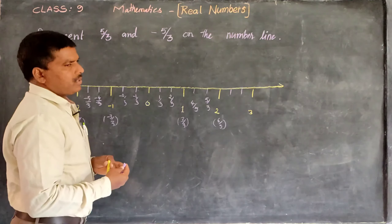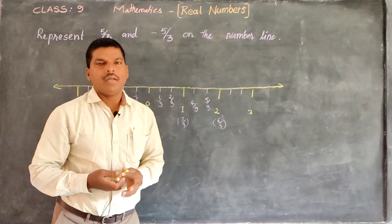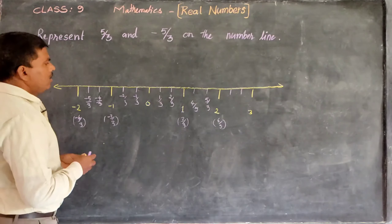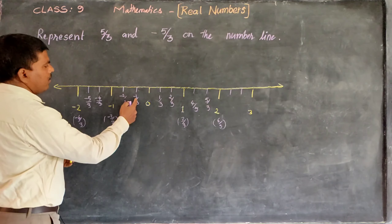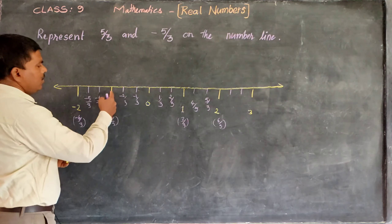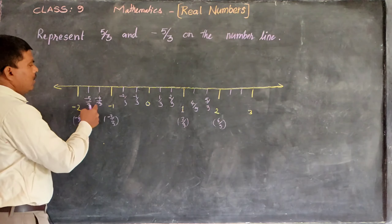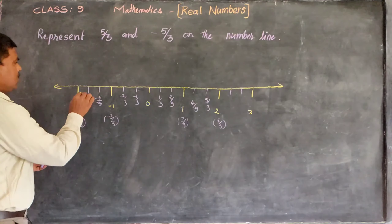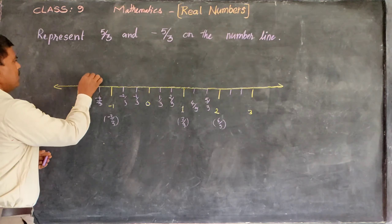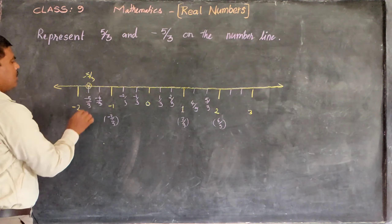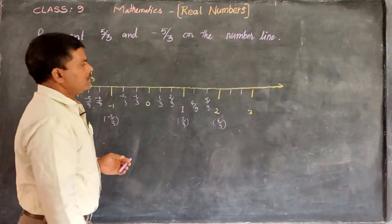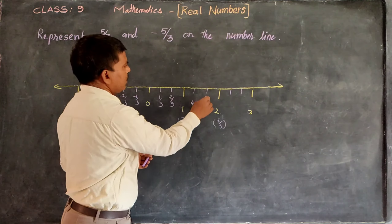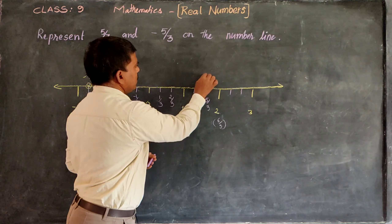So we have to show 5/3 and minus 5/3 on this number line. If you observe: minus 1/3, minus 2/3, minus 3/3, minus 4/3, minus 5/3 — so this is minus 5/3. And this is plus 5/3, that is 5/3.